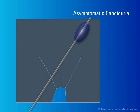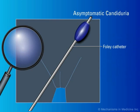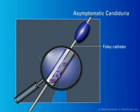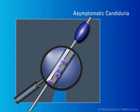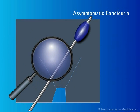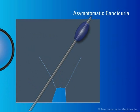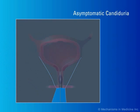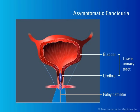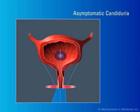The presence of a Foley catheter may prompt candida colonization of the lower urinary tract due to candida colonization either on the external or the internal surface of the catheter. Subsequent invasion of the bladder may occur, also known as cystitis. Resolution of colonization can often be attained by removal of the catheter.